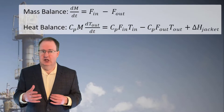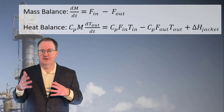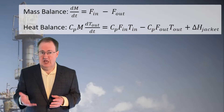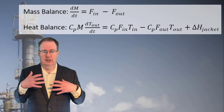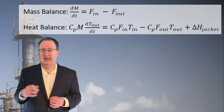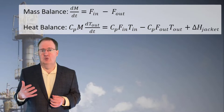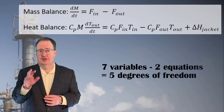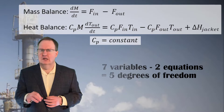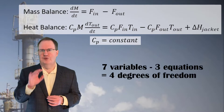In the mass balance, M is the mass in T100, while F-in and F-out are the mass flows in and out. In the heat balance, C-sub-P is the heat capacity; T-in and T-out are temperatures of the inlet and outlet flows; and delta-H-jacket is the heat removed by the cooling water in the T100 jacket. There are seven variables and two differential equations, but C-sub-P is a constant, so seven variables minus three equations gives four degrees of freedom.